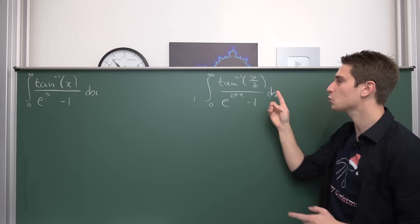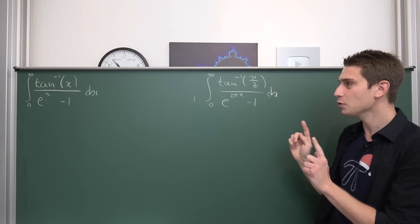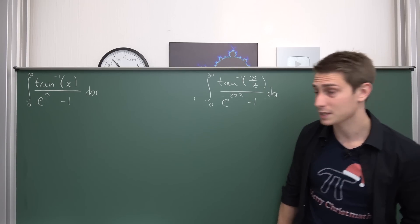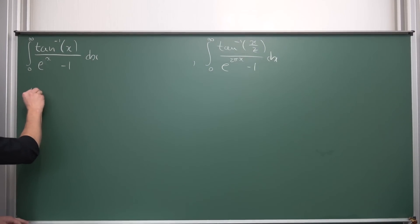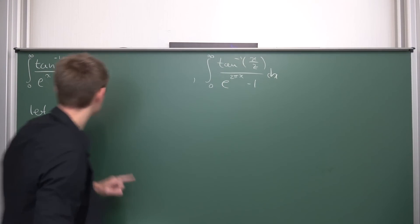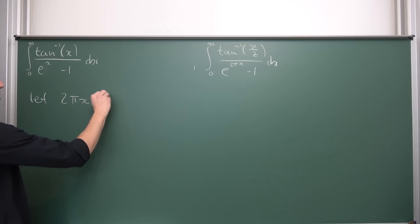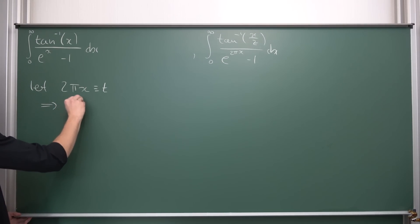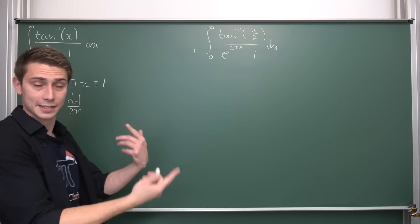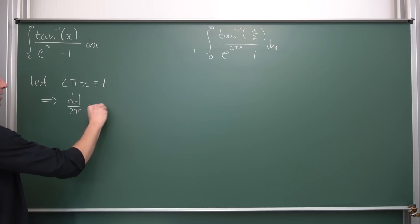This right here is a parameterized integral in the variable z, so we also need to plug in a value for z later. But first let us get rid of this problem with the 2π·x in the exponent. Naturally, we are going to make a substitution: let 2π·x be equal to t. This means dt over 2π equals dx — we can divide both sides by 2π since 2π is not equal to 0. So we can divide both sides by 2π. Just keep this in mind: that gives us dx equals dt over 2π, and x equals t over 2π.